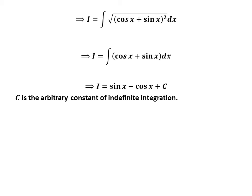The antiderivative of cosine of x is sine of x, and the antiderivative of sine of x is minus cosine of x.